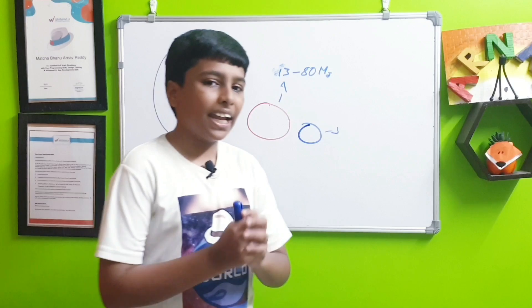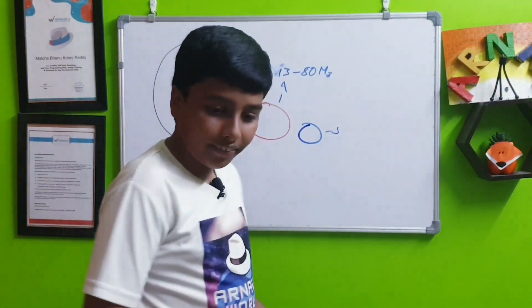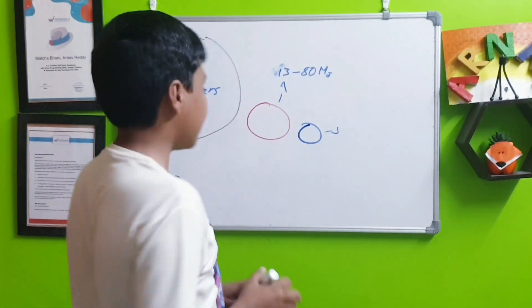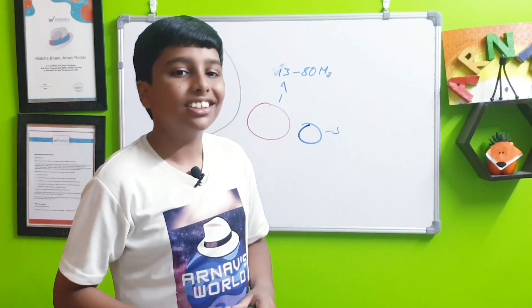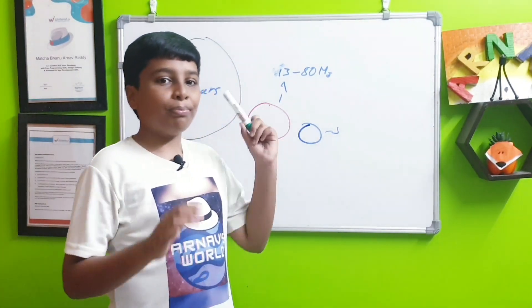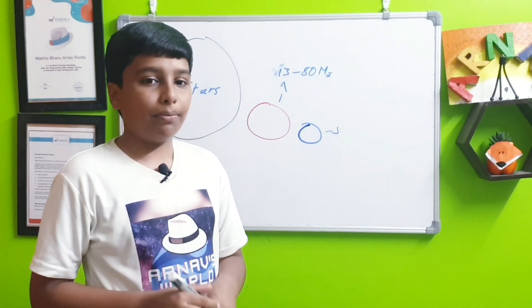Now let's see some of the different types of brown dwarfs. So let's make some space. There are four main subclassifications of the dwarfs based on their spectrum.